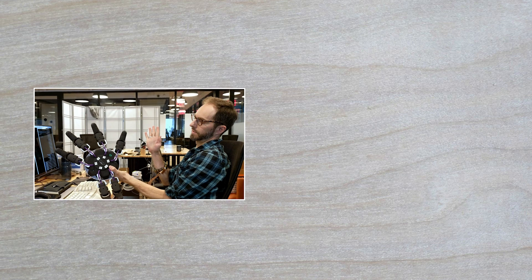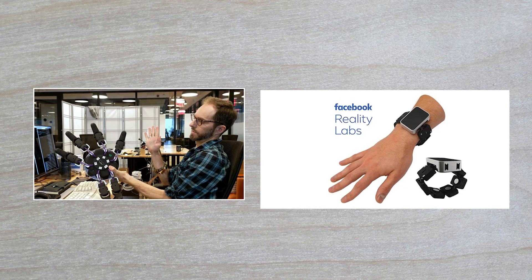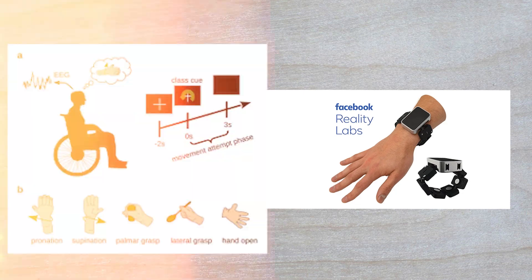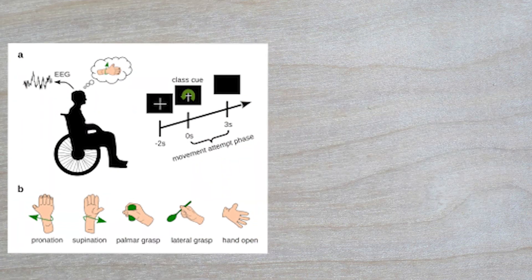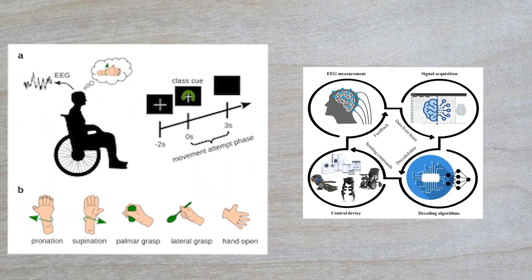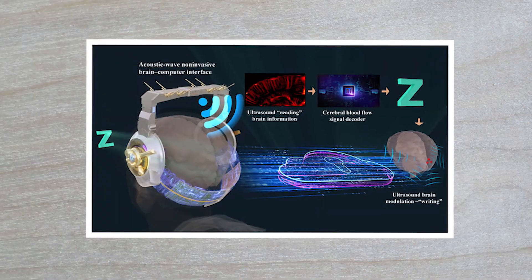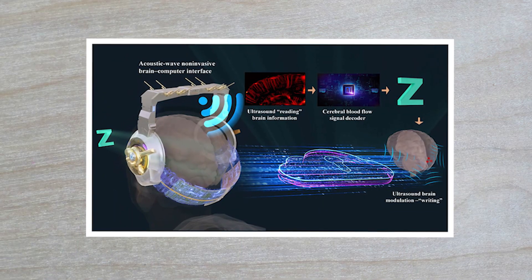Control Labs, which was acquired by Meta and is now part of Facebook Reality Labs, was previously working on wrist-worn devices capable of interpreting neural signals associated with hand movements. This technology aimed to provide a non-invasive alternative to traditional brain-machine interfaces.